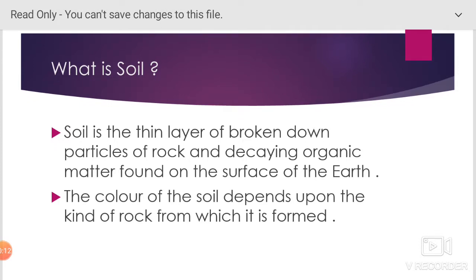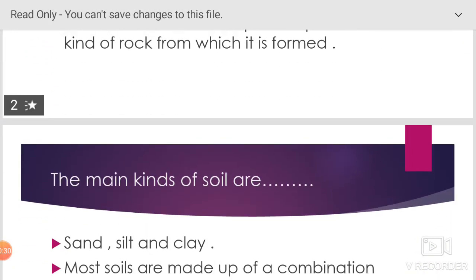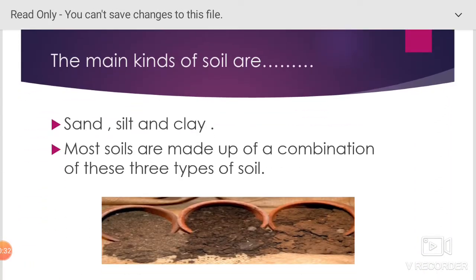What is soil? Soil is the thin layer of broken ground particles of rock and decaying organic matter found on the surface of the earth. The color of the soil depends upon the kind of rock from which it is found. The main kinds of soil are sand, silt, and clay. Most soils are made up of a combination of these three types.